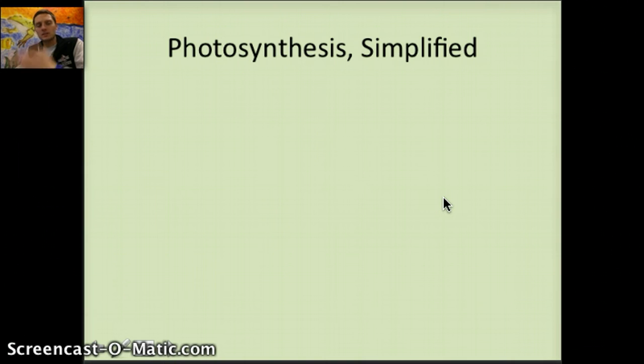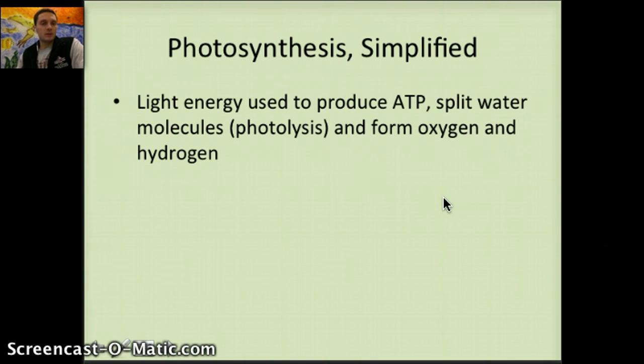Now, photosynthesis simplified: light energy is used to produce ATP. Water molecules are split by photolysis and form hydrogen, oxygen, and hydrogen. So we're producing O2 that humans and other animals use in order to breathe, and then those hydrogen ions will be used throughout the process of photosynthesis.